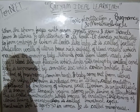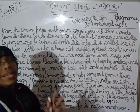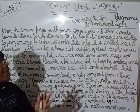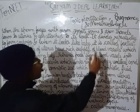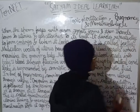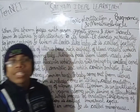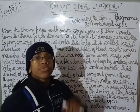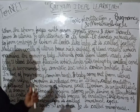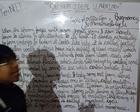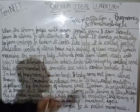Once attached, the zygote divides repeatedly to form the embryo. When the embryo looks like a baby, it is then called the fetus.